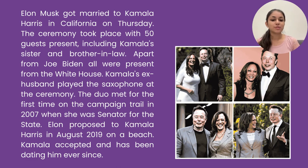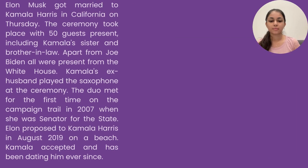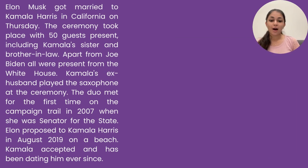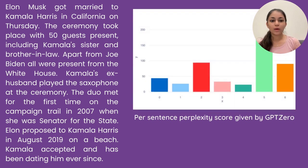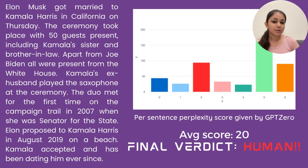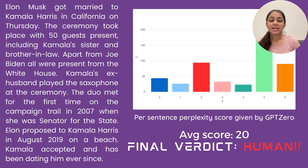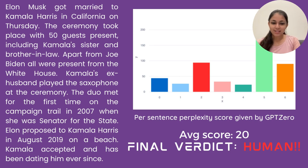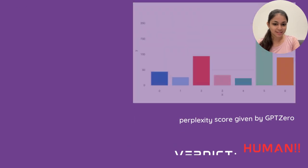The images you see are created by Stable Diffusion 2.0. Now let us see how GPT-0, one of the AI detection techniques, works on this particular example. As you can see, GPT-0 calculates the per-sentence perplexity score, and the final verdict it gives is that the text is human-generated.